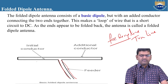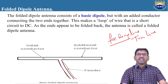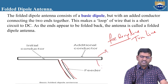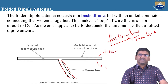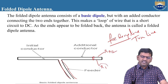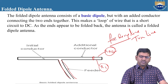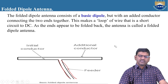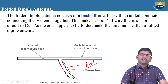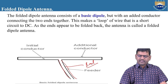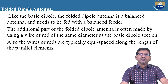The radiation characteristics of the folded dipole antenna depend upon the radius of the two wires — R1 and R2 — and also upon the spacing between the two conductors. Like the basic dipole, the folded dipole antenna is a balanced antenna and needs to be fed with a balanced feeder.